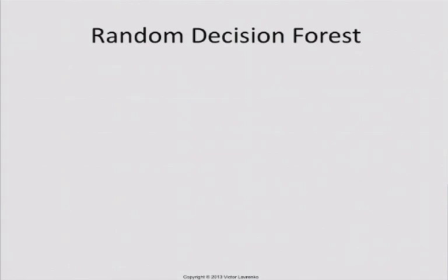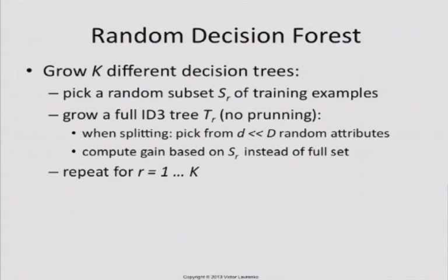Decision forests are an adaptation of decision trees that tries to fix many of these problems, in a strange way that seems totally counterintuitive but works. The idea is that instead of growing a single tree, you grow a bunch of different trees. You take your set of training examples, randomly split it into K different sets, and for each set you learn the full-depth ID3 tree without any pruning — the full tree that will perfectly separate the data.